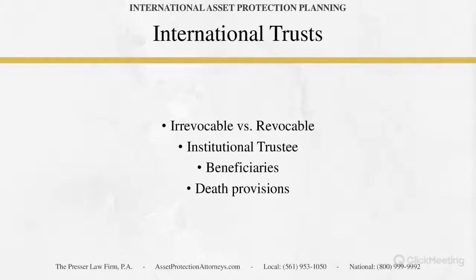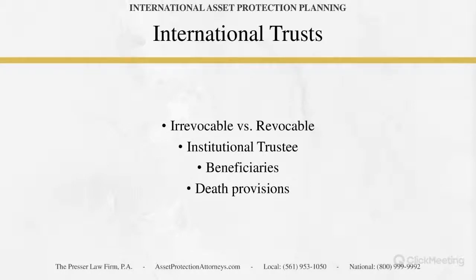The first thing I want to go into with regard to international planning is the international trust. An international trust can technically be irrevocable — meaning one that you can't particularly change — or it can be revocable, in which the settlor might be able to make a change. If you want the ultimate protection, you're going to go with an irrevocable trust. I have seen some revocable international trusts, but many times we see those with clients who are actually non-U.S. clients.